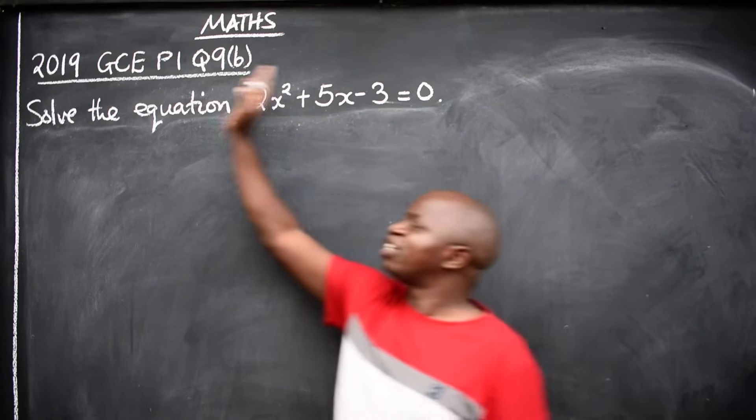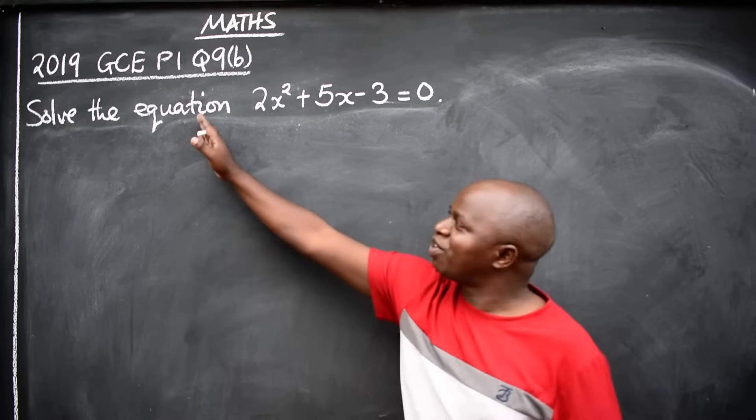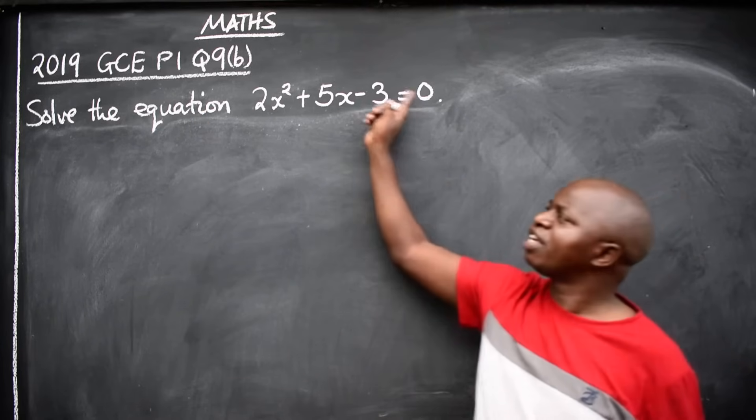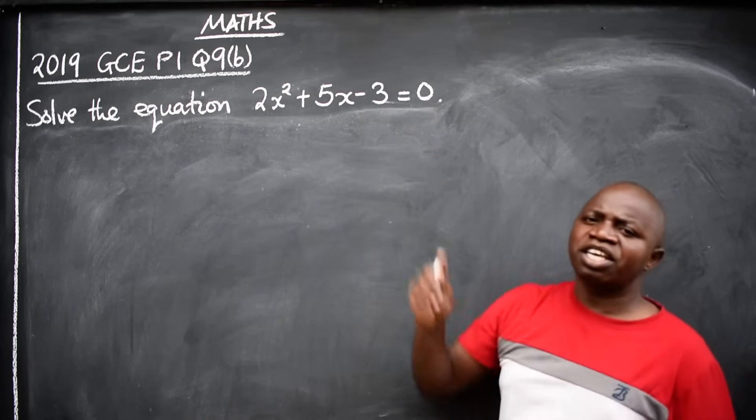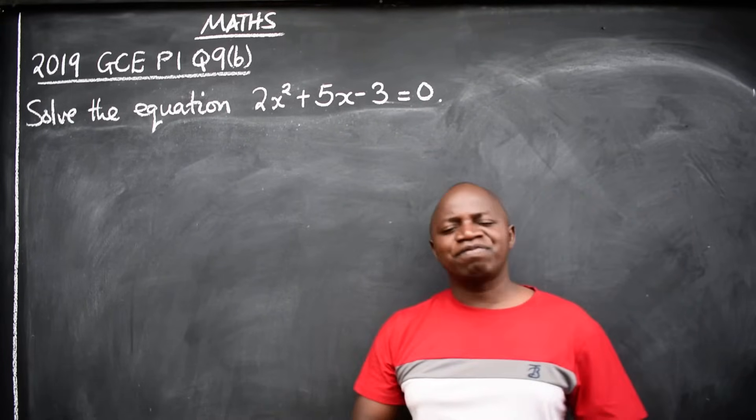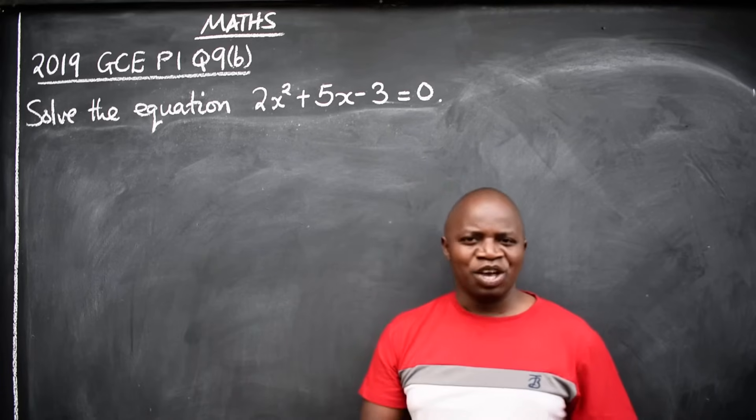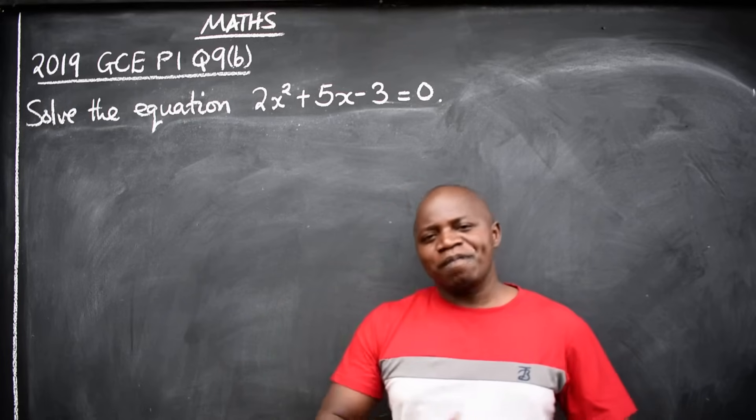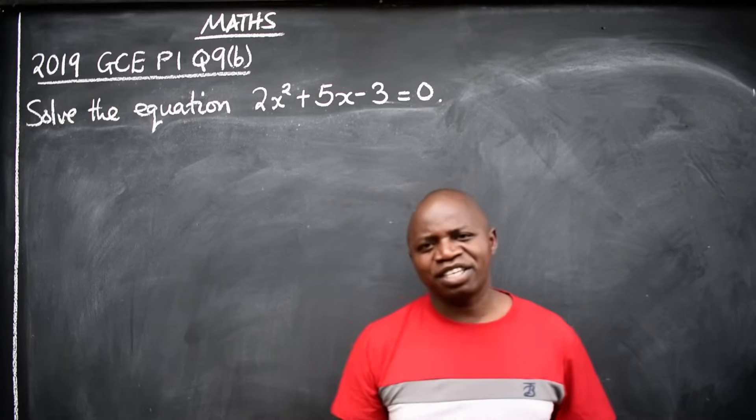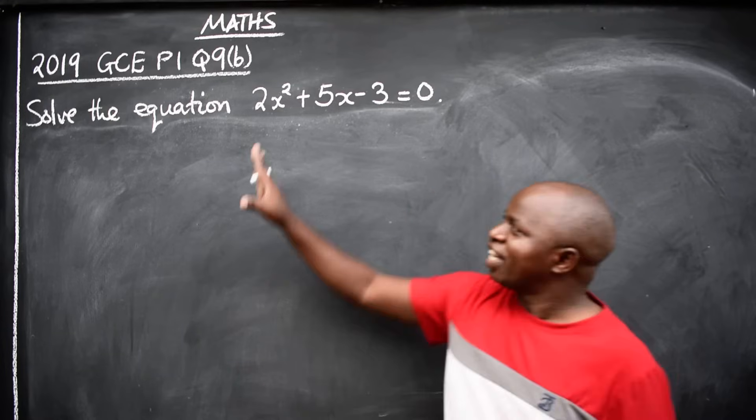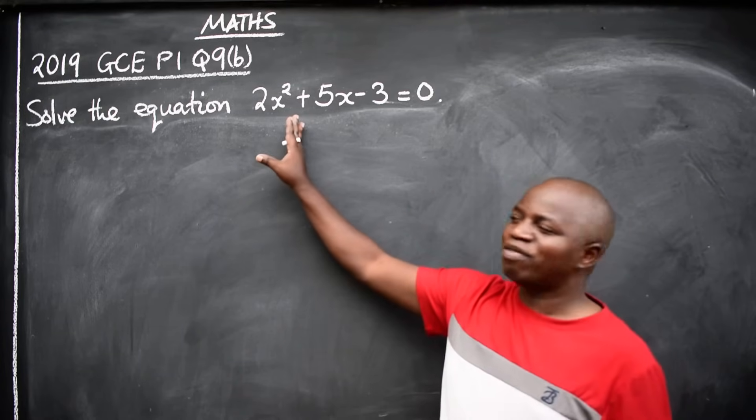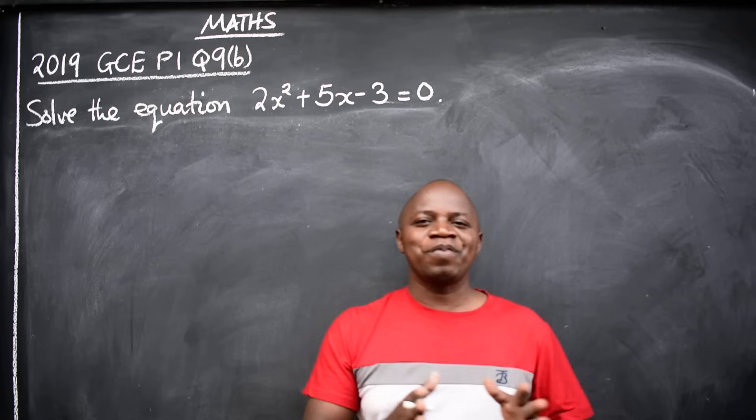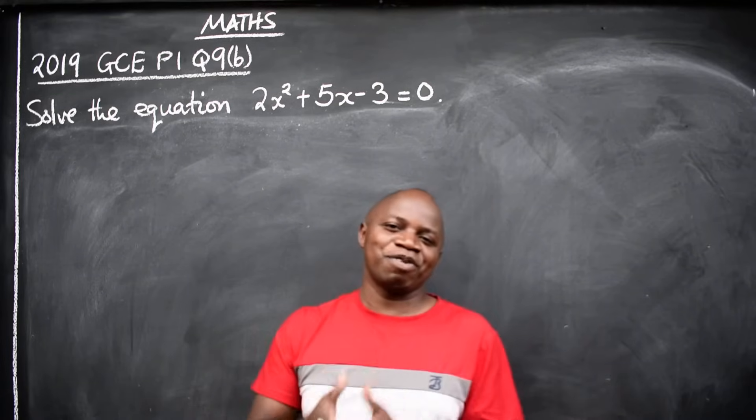We are solving the equation. This equal sign is what identifies it as an equation. Now remember, we have different types of equations: exponential equations, trigonometric equations, linear equations, and so many. Now, what type of equation is this? The moment you identify the type, you will be able to remember what you are supposed to do.